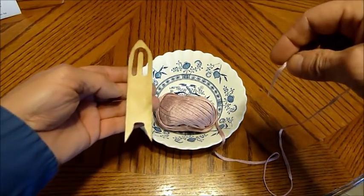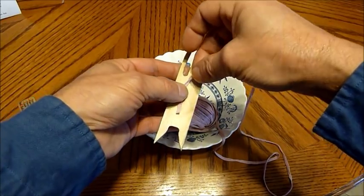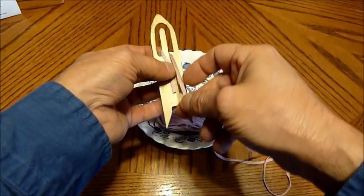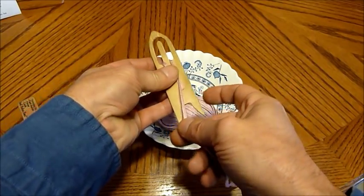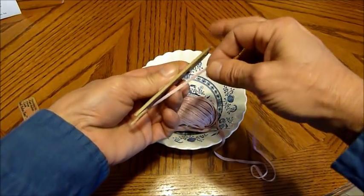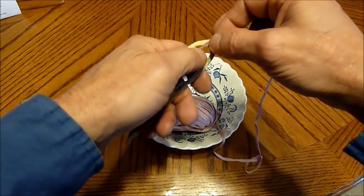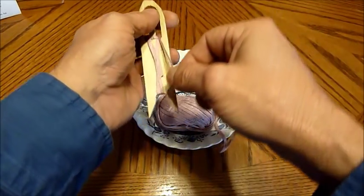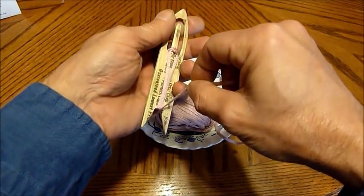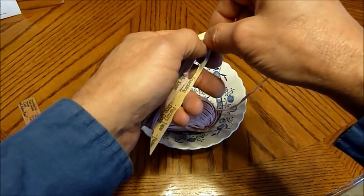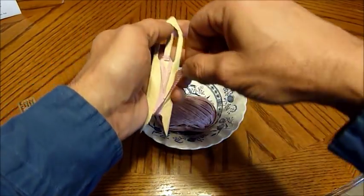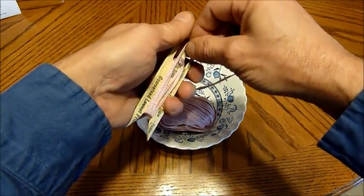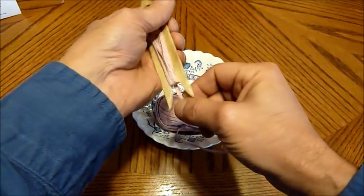To load up your netting needle, you just put your material on it like that. Get it started, kind of pin down that starting point, and then you just go back and forth. Left to right, right to left. Not spinning it around. That'll make a little more twist than you'd like. But that's how it goes.